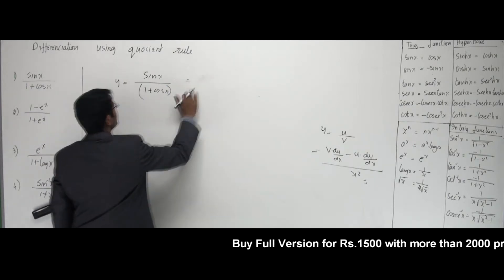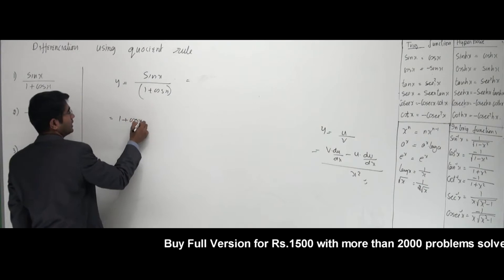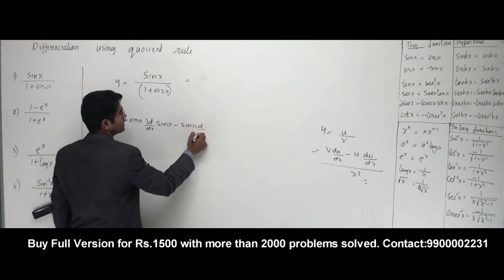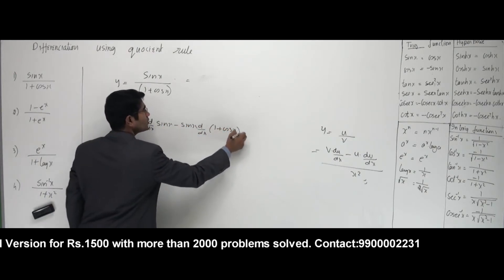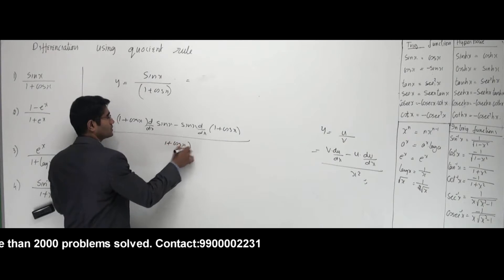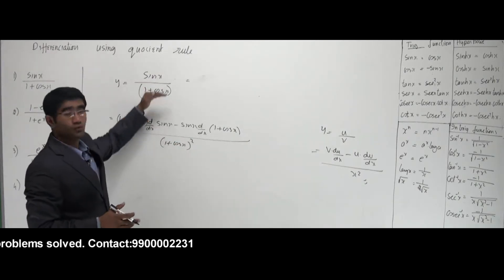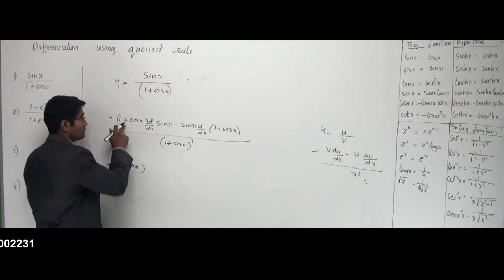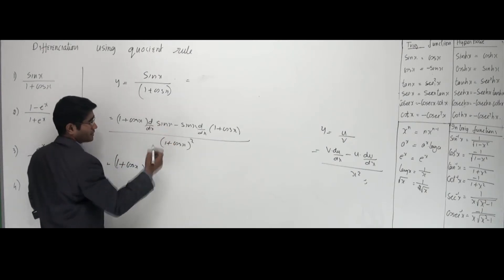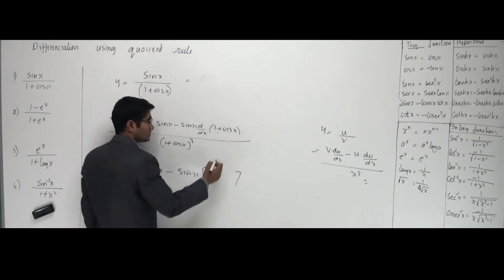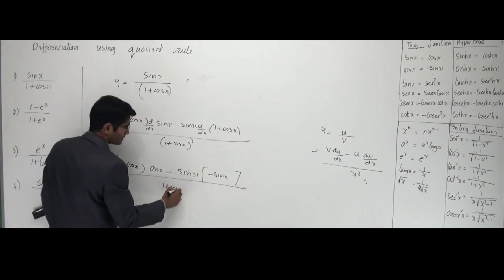So what happens? v is 1 plus cos x, into the differentiation of sin x, minus sin x into d/dx of 1 plus cos x — very simple. And you have the denominator whole squared according to the formula. So v squared is 1 plus cos x, the whole squared. This is the way we separate two functions that come as a division. Now, 1 plus cos x stays as is — there is no differentiation sign yet. Differentiation of sin x is cos x. Minus sin x. Differentiation of 1 plus cos x: 1 is 0, cos x is minus sin x. All divided by 1 plus cos x, the whole squared.